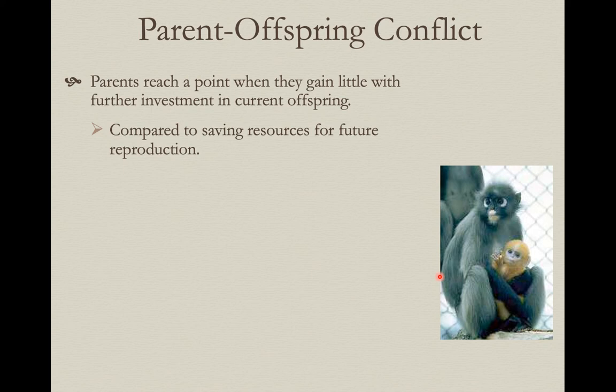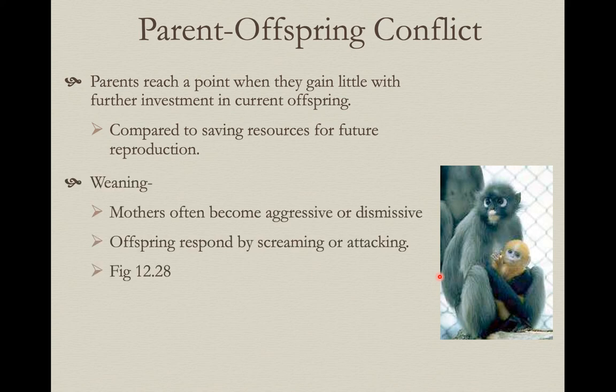From the individual just trying to get as much milk as possible, taking more may be in their own best interest — and that can lead to conflict. At weaning, you often see a lot of crying and angst between parents and offspring. Mothers can be aggressive or dismissive, and offspring respond by kicking, screaming, and maybe even attacking the female.